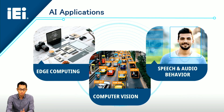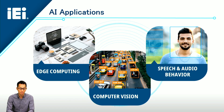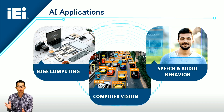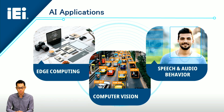To be more specific, what we can do with AI: for instance, we can do edge computing, computer vision, and speech, audio, and behavior analysis. For edge computing, it can decrease network latency and save bandwidth. For computer vision, it can do image classification or face recognition. And for speech or audio behaviors, it helps to do voice recognition.